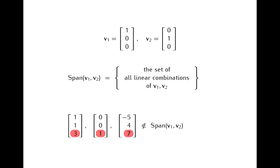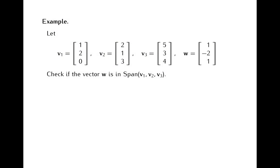In this example it was very easy to determine which vectors are in the span and which are not, but that's because the vectors v1 and v2 are very simple. Here is a more difficult situation: we have three vectors v1, v2, and v3, which are again vectors in R3, so we can consider the span of these three vectors. We also have a vector w, and we would like to check whether w is in the span of v1, v2, and v3 or not. Since the vectors are more complicated than in the previous example, we don't see immediately if w is in the span, so we will need to work on it a bit.